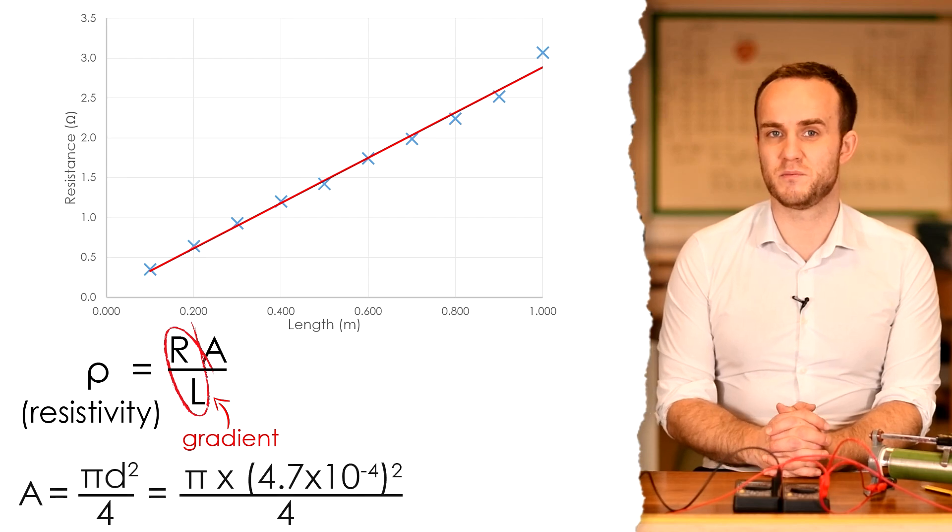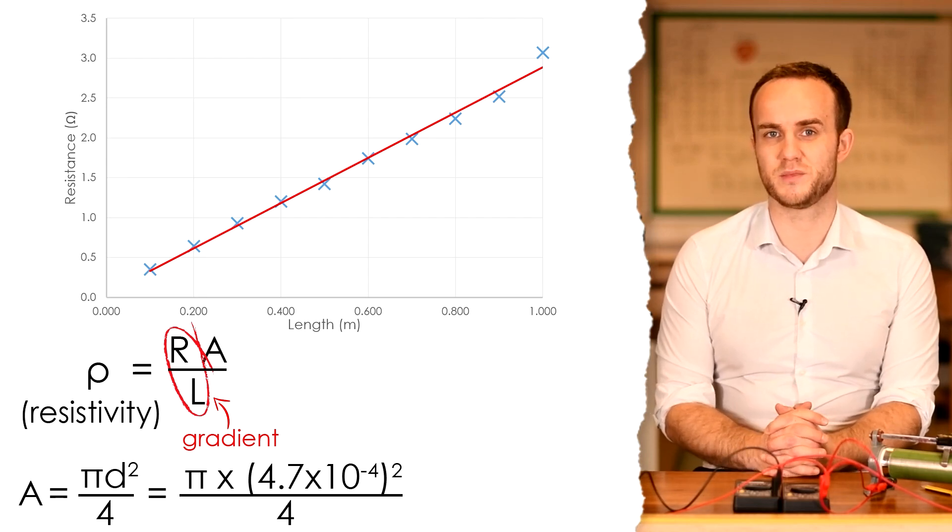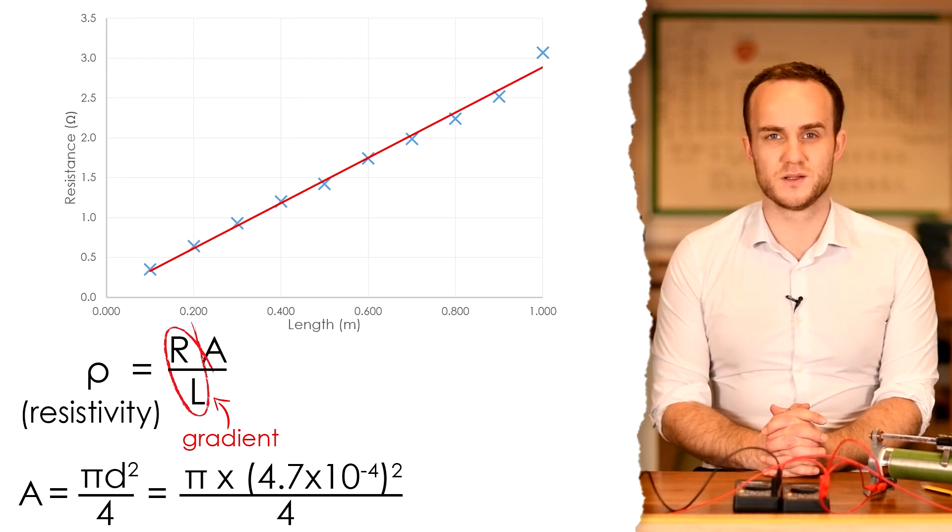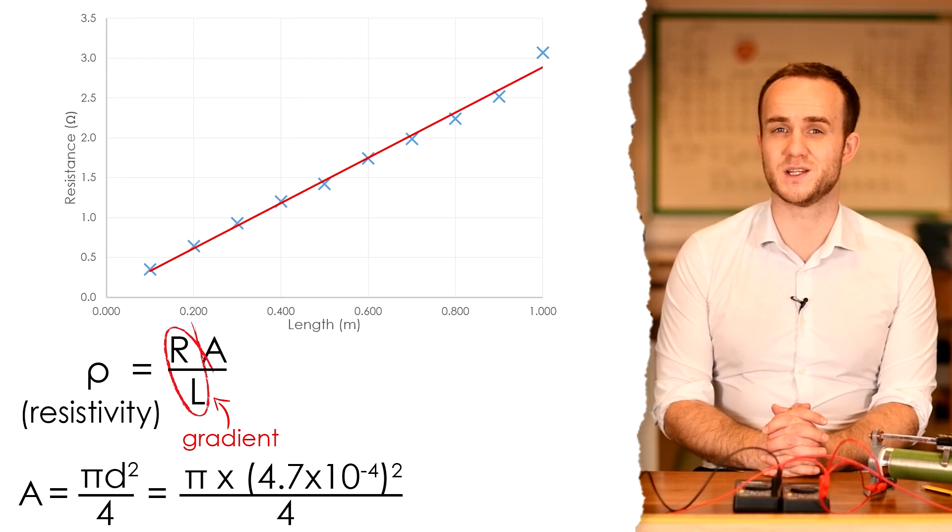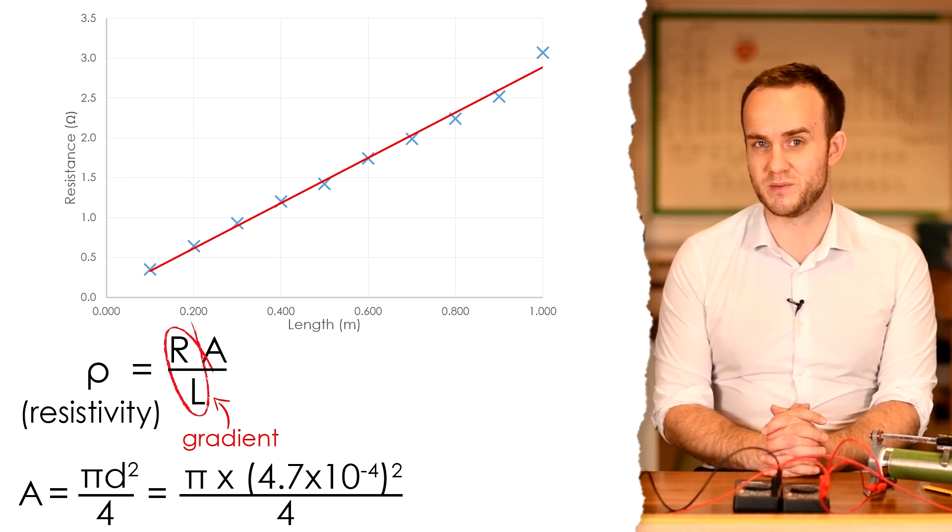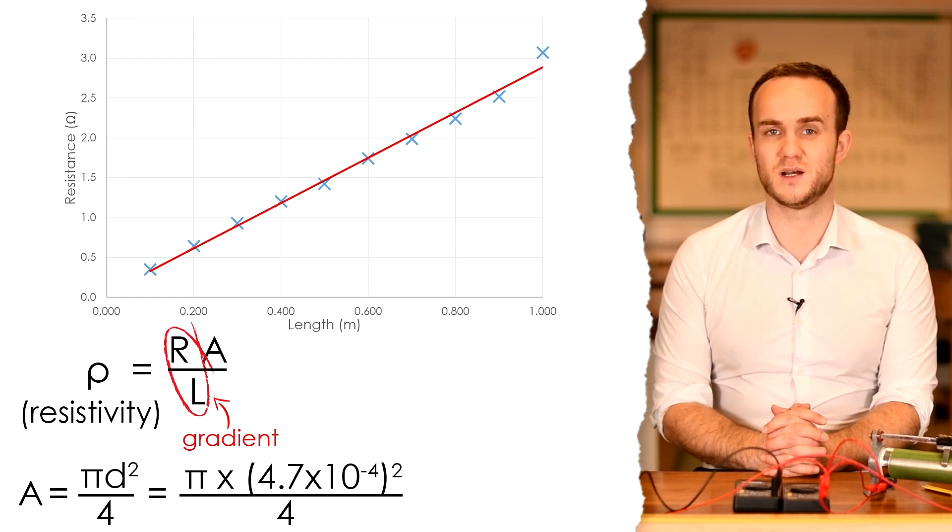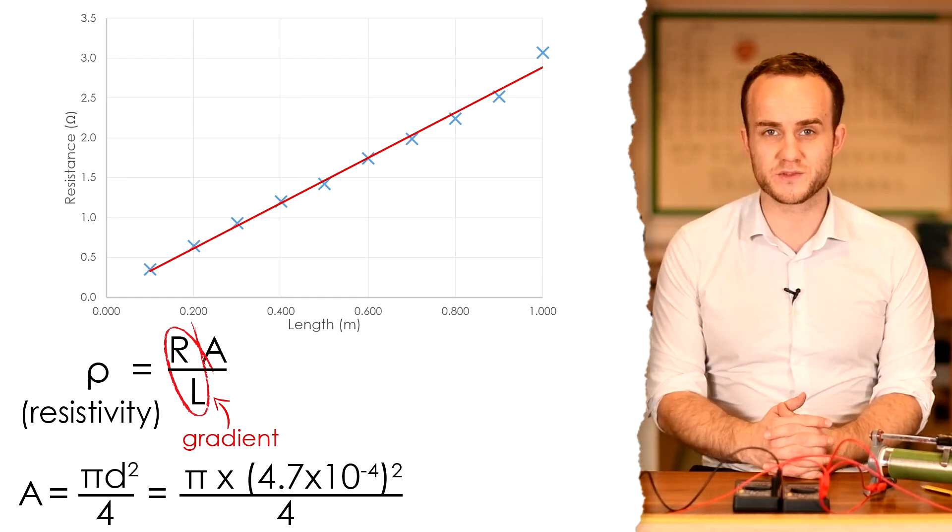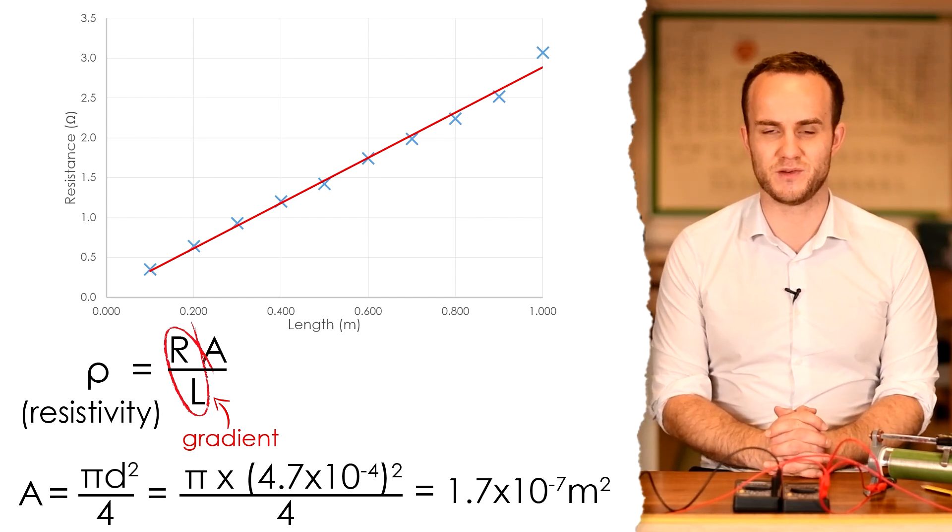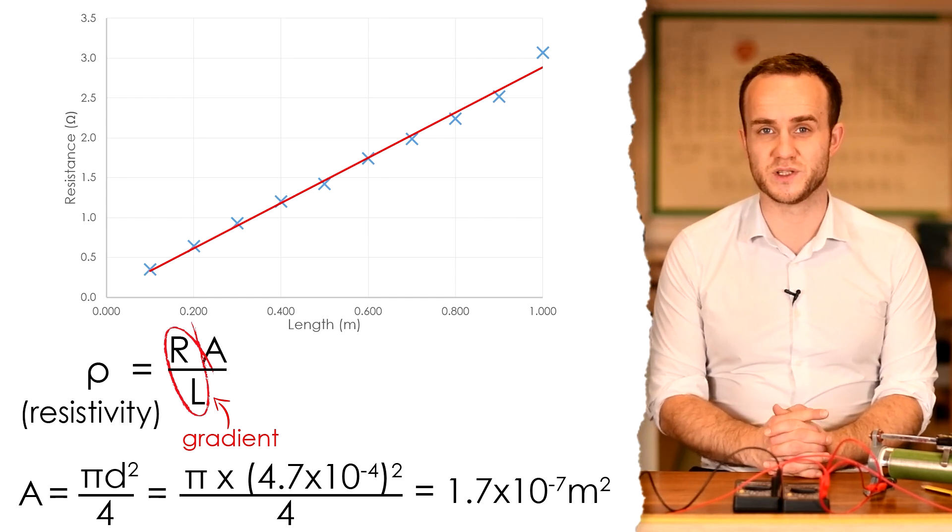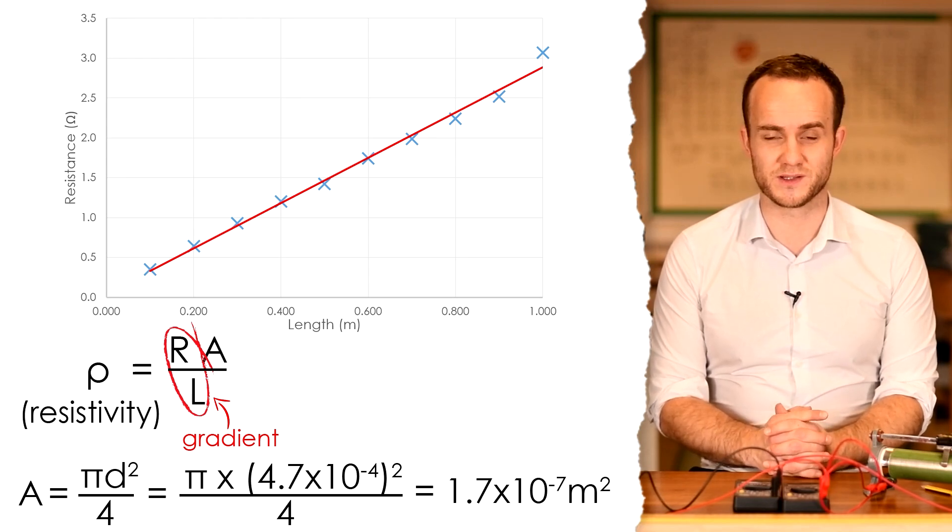So all we have to do is replace that with our 2.84 and then times that by the cross-sectional area. How do we calculate cross-sectional area? Pi R squared, but because we've got the diameter, we're going to use pi D squared over 4. Same thing. So we're going to take pi times that by 4.7 times 10 to the minus 4 because it has to be in meters. That was 0.47 millimeters. Square that and then divide by 4. That gives us a cross-sectional area of 1.7 times 10 to the minus 7 meters squared. We can only go to 2 sig figs because our diameter was still only 2 sig figs.